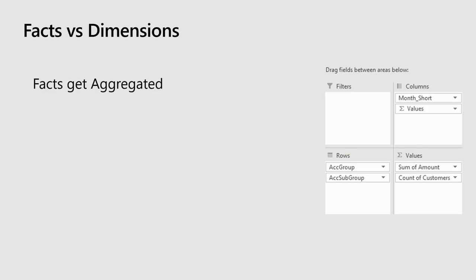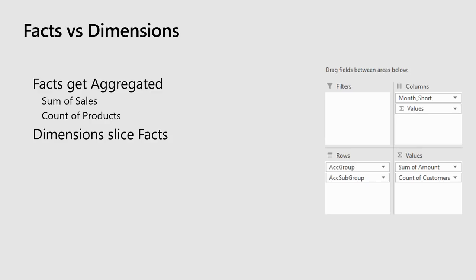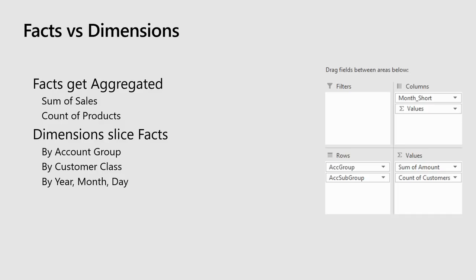As you start moving into Power Pivot, you need to know this stuff — the terminology and the way we put it all together matters. Facts get aggregated. It's all about taking multiple values and turning them into a single value — summing them up to get sum of sales, or counting them to get a count of products. Dimensions are how we slice our facts. The key keyword is 'by' — when I want to see my sum of sales by customer, by account group, by day, by month, by year, that means I'm talking about a dimension.